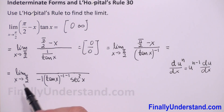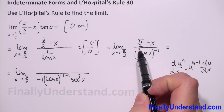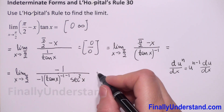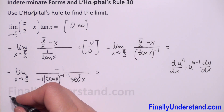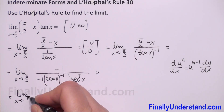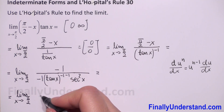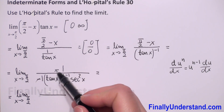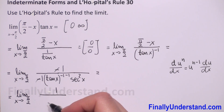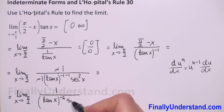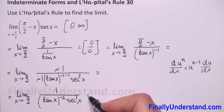Now we find the derivative of the numerator: the derivative of pi over 2 is 0, and the derivative of negative x is negative 1. We have a negative from the power rule and a negative from the numerator derivative, so the two negatives cancel. We are left with 1 over tangent of x to the power negative 2, times secant squared of x.